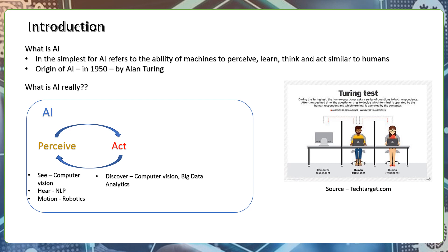This is the understand and respond — this act is the response. This is natural language processing, and the natural language generation. This is the acting, which means the decision. This means the reasoning ability is the act. This is called Decisions and Act Reasoning, which is an expert system.